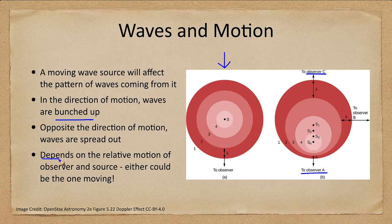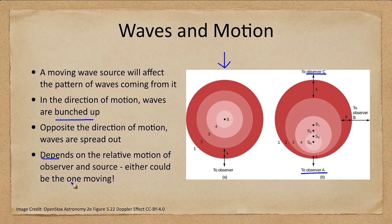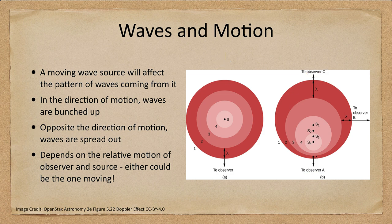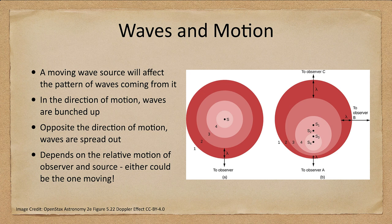Now this depends on the relative motion of the observer and the source. So it really doesn't matter who is moving. It could be the observer. You could have a stationary source and a moving observer and you would get exactly the same effect. It is just that relative motion that tells us what the shifts will be.